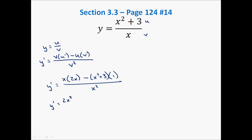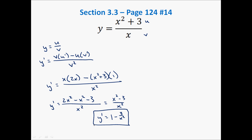So, 2x squared minus x squared — being careful to distribute the negative sign — minus 3, all over x squared. Simplifying further: 2x squared minus x squared is x squared, giving us x squared minus 3 over x squared. We found y prime using the quotient rule.